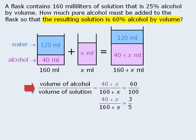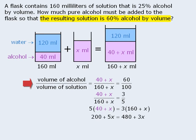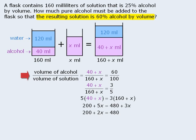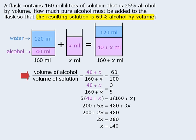We want this fraction to equal 60%, so we will make it equal to 60 over 100. We can simplify the right-hand side to be 3 fifths. From here we can cross multiply, then expand both sides. Now we can subtract 3x from both sides, then subtract 200 from both sides, and then divide both sides by 2 to get x equals 140. So we must add 140 mL of pure alcohol to the original solution to get a new solution that is 60% alcohol by volume.